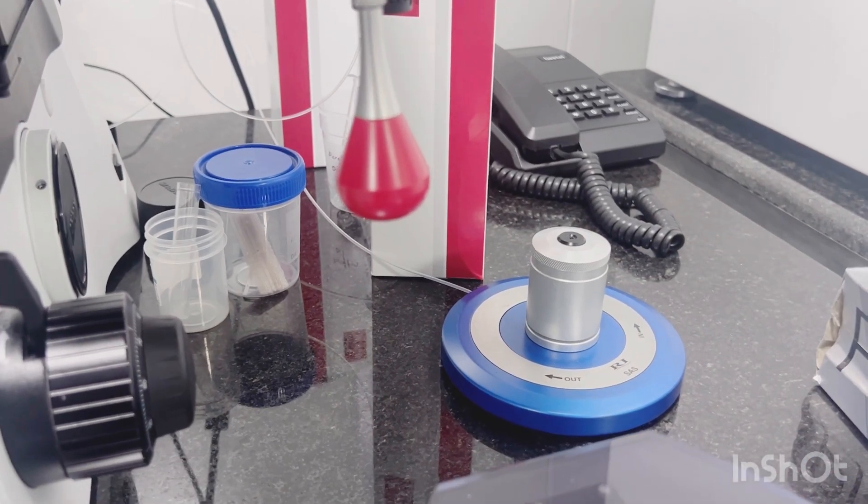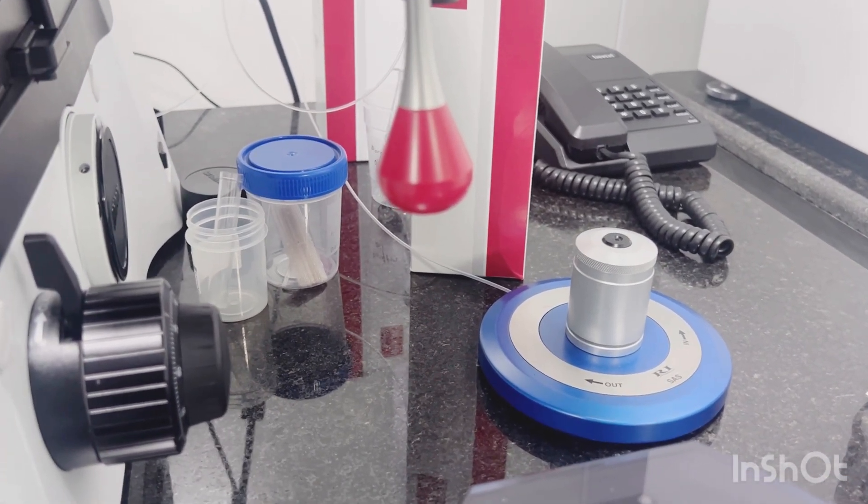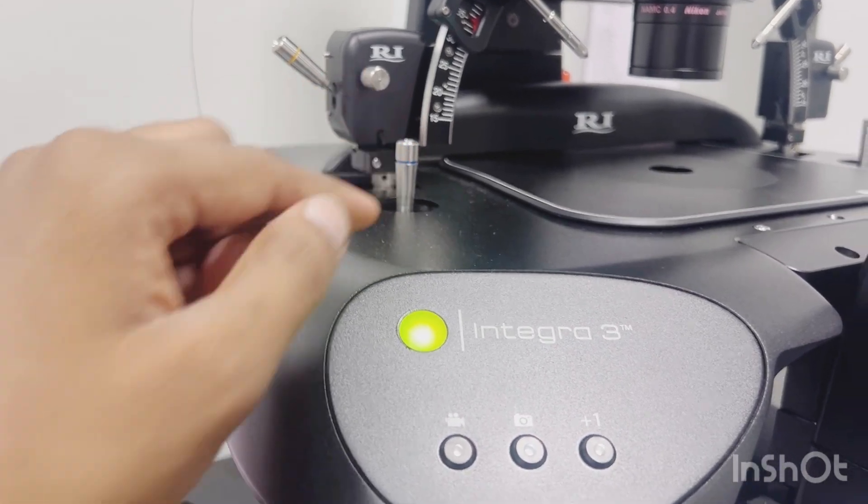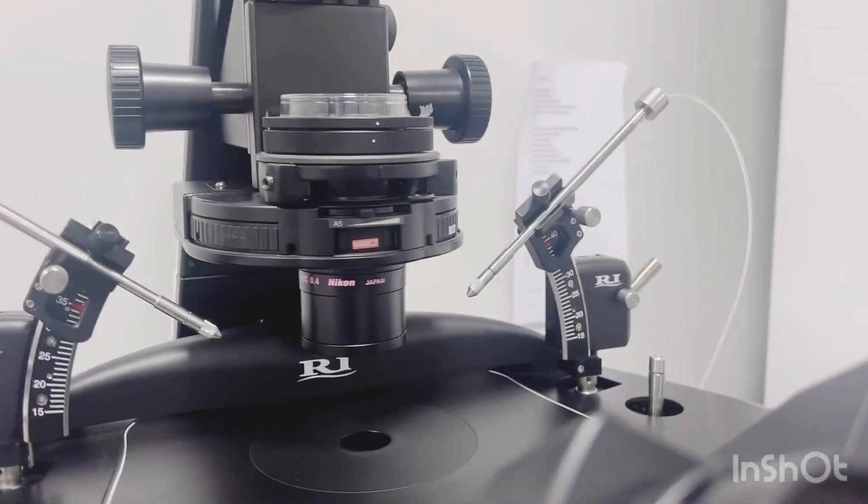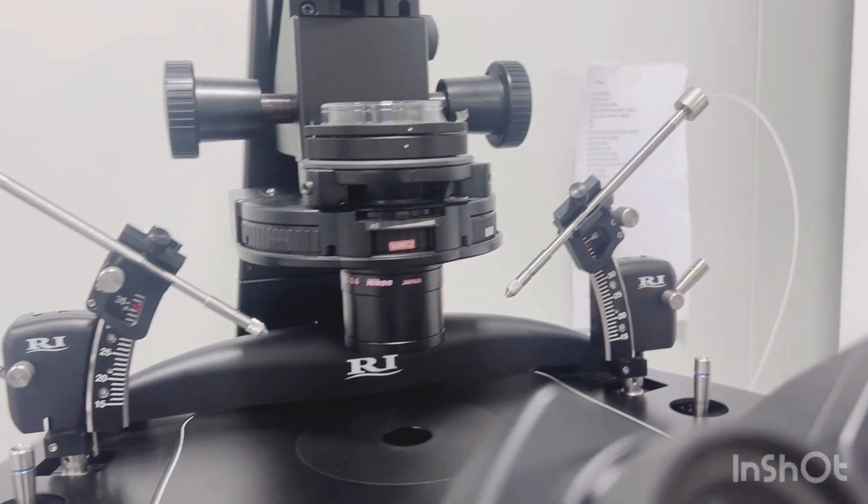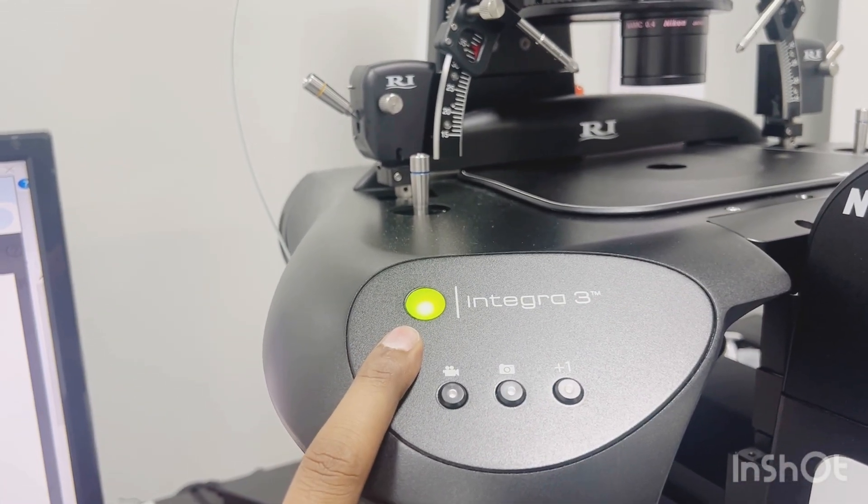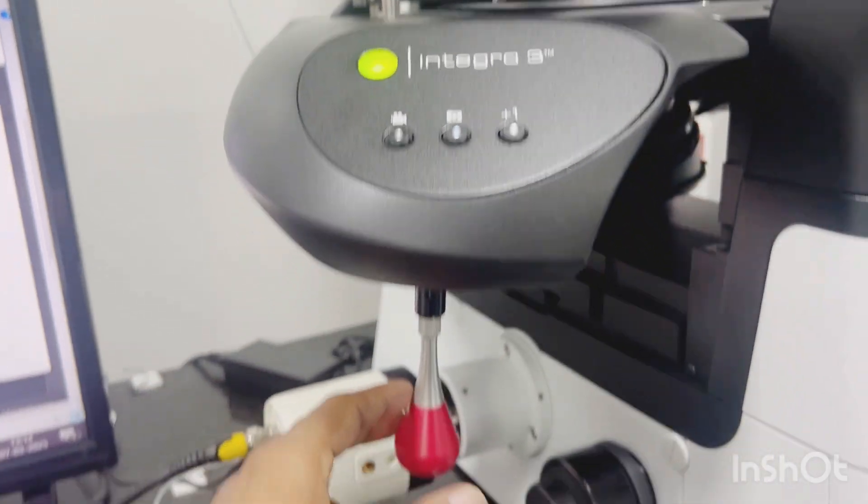The whole SAS - that is Screw Actuated Air Syringe Assembly - has coarse control levers on the left side and right side. This is the status indicator light.